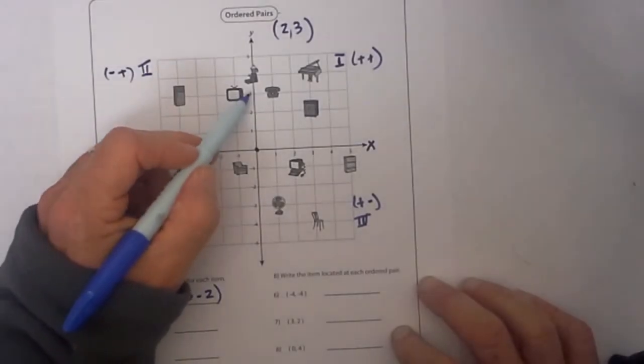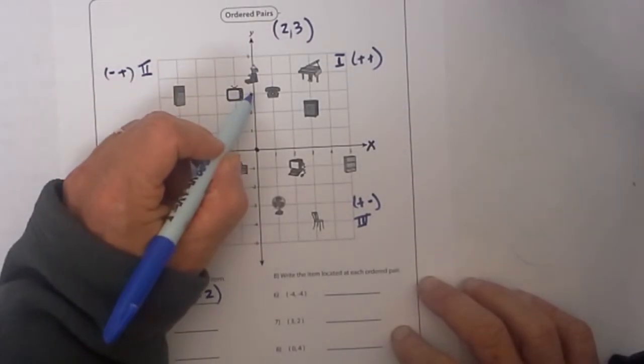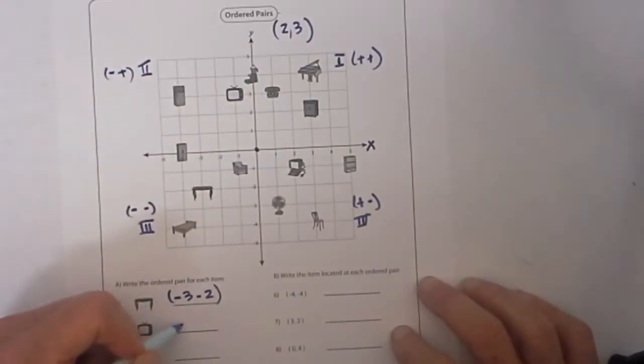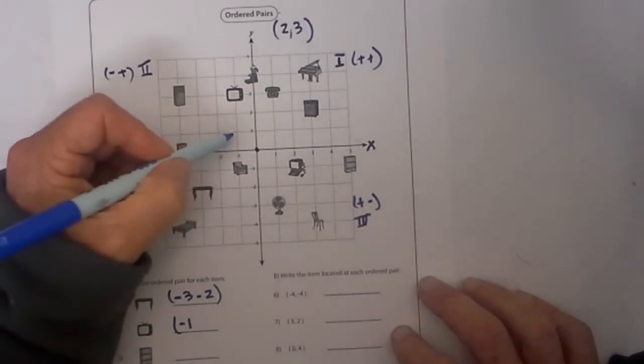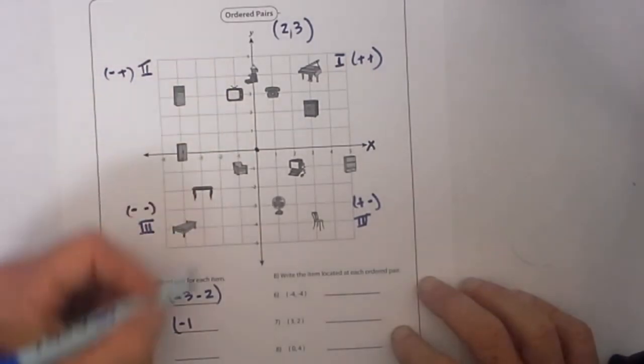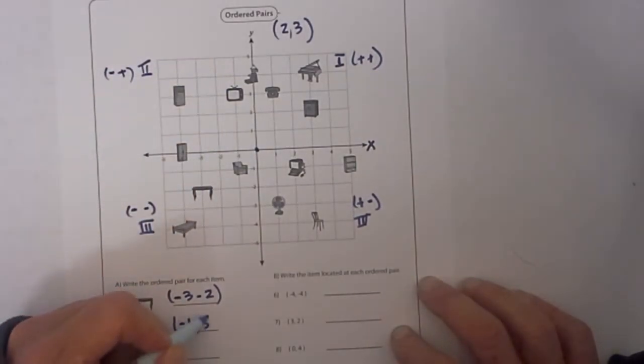The TV, the first number is x. We go over negative 1 and then we go up 1, 2, 3 and it will be a positive 3.